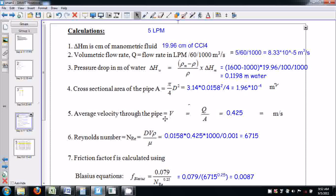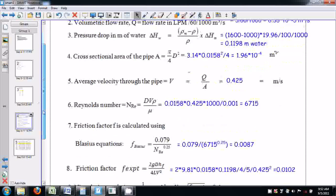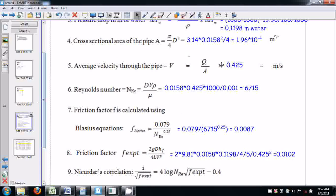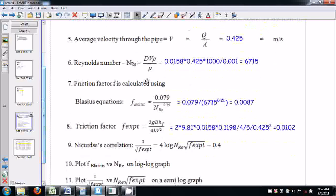Then cross-sectional area of the pipe is pi by 4 D squared. The average velocity through the pipe is volumetric flow rate divided by cross-sectional area. This gives this value. Reynolds number is D times V times rho divided by mu.